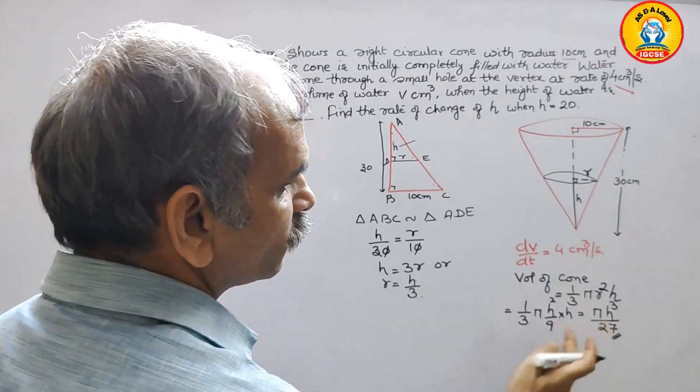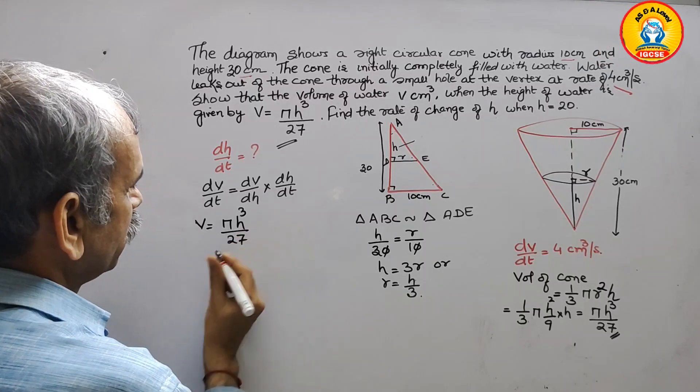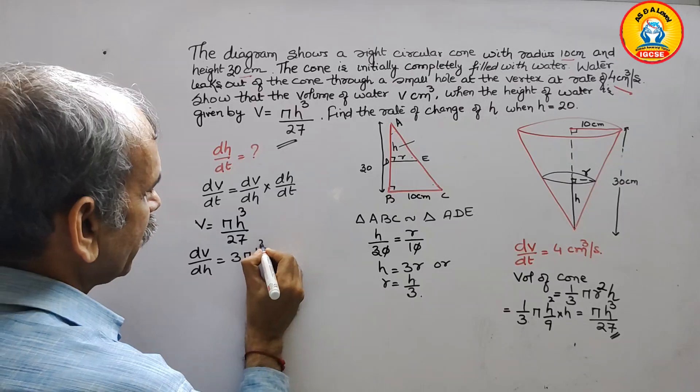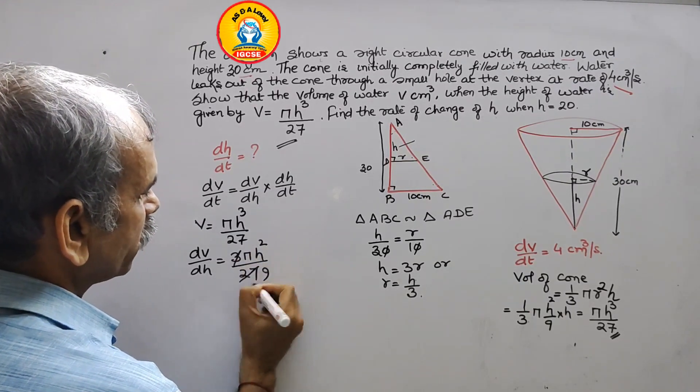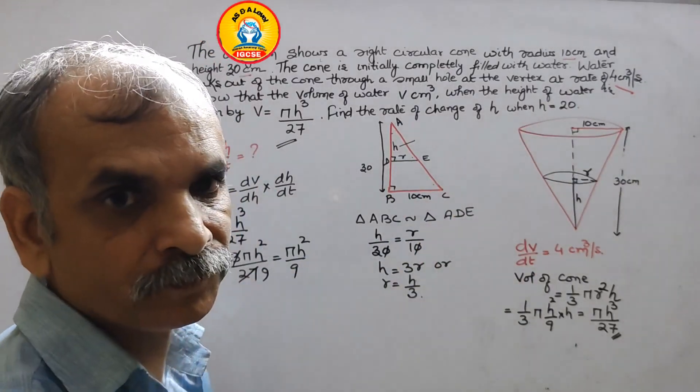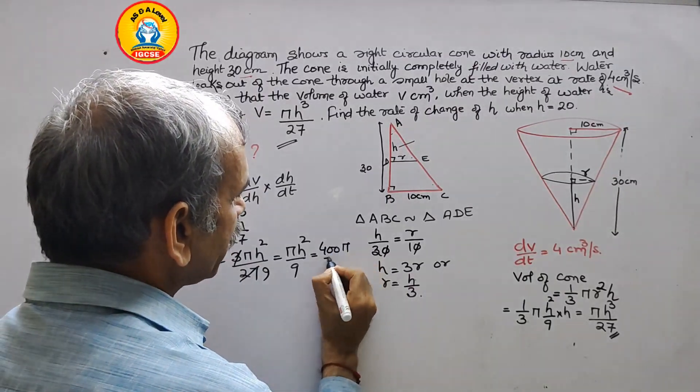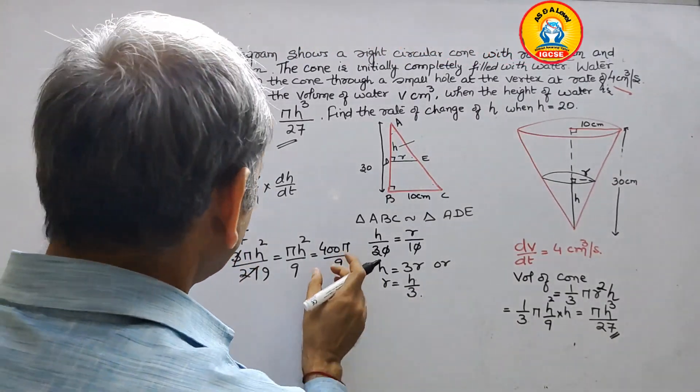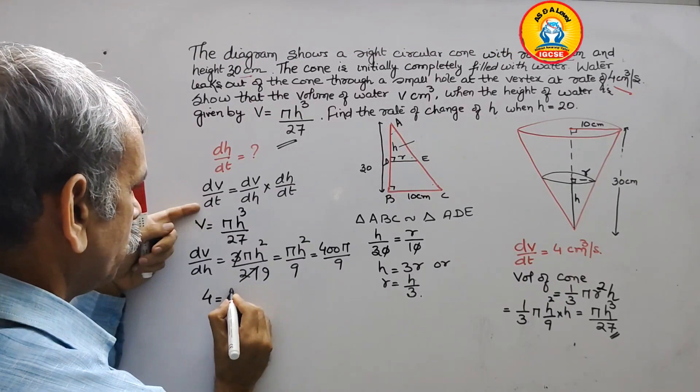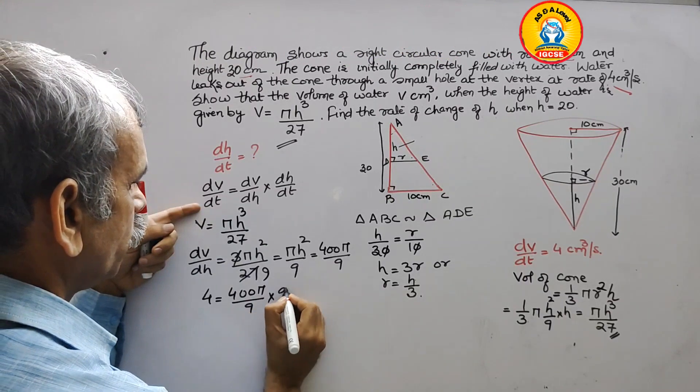dv/dt, so v is this value. v is πh³/27. Now dv with respect to h is what? 3πh²/27. This and this will go out in 9. Now we got πh²/9. But they have given h is 20. So here what we will get? 20² is 400. 400π/9. This we got. Now we have to substitute here. dv/dt is 4 = 400π/9 × dh/dt.